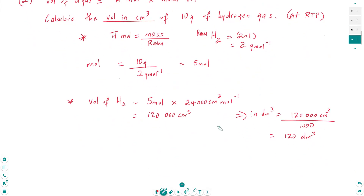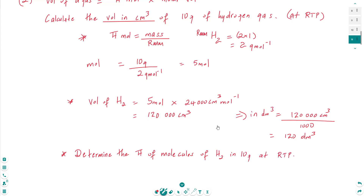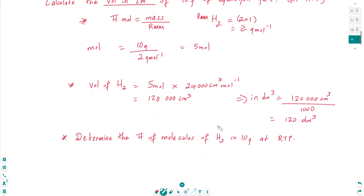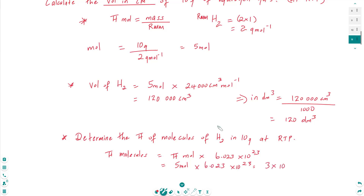Going further, determine the number of molecules of hydrogen in 10 grams at RTP. We already know that 10 grams of hydrogen = 5 moles. The number of molecules equals the number of moles multiplied by Avogadro's number, which is 6.023 × 10²³. So 5 moles × 6.023 × 10²³ = 3 × 10²⁴ molecules.